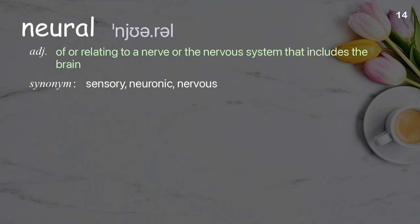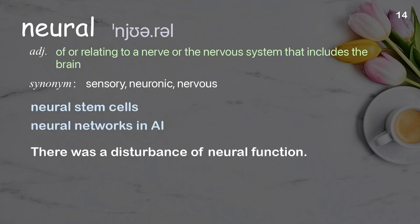Neural: of or relating to a nerve or the nervous system that includes the brain. Examples: neural stem cells, neural networks in AI. There was a disturbance of neural function.